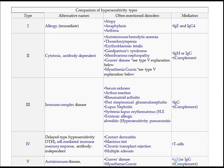I made a beautiful table for you so that you can memorize easily. This is a very important table for your examination because you need to know the examples and the mediators. Type 1 starts with allergy and immediate reactions. The disorders included in Type 1 are atopy, anaphylaxis, and asthma. The mediators — very important — are IgE and IgG4.